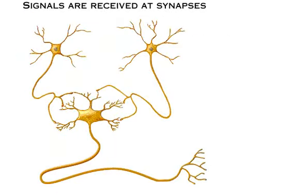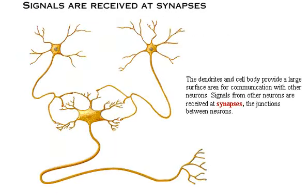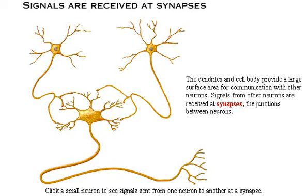The dendrites and cell body provide a large surface area for communication with other neurons. Signals from other neurons are received at synapses, the junctions between neurons. Click a small neuron to see signals sent from one neuron to another at a synapse.